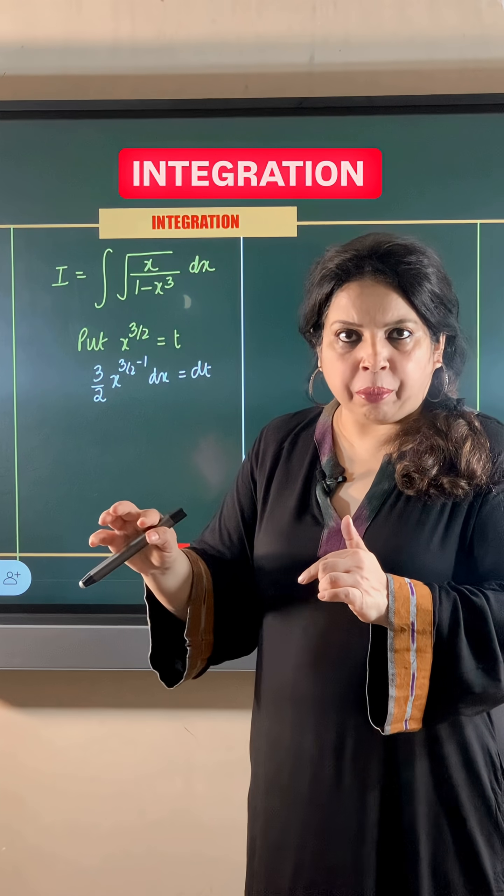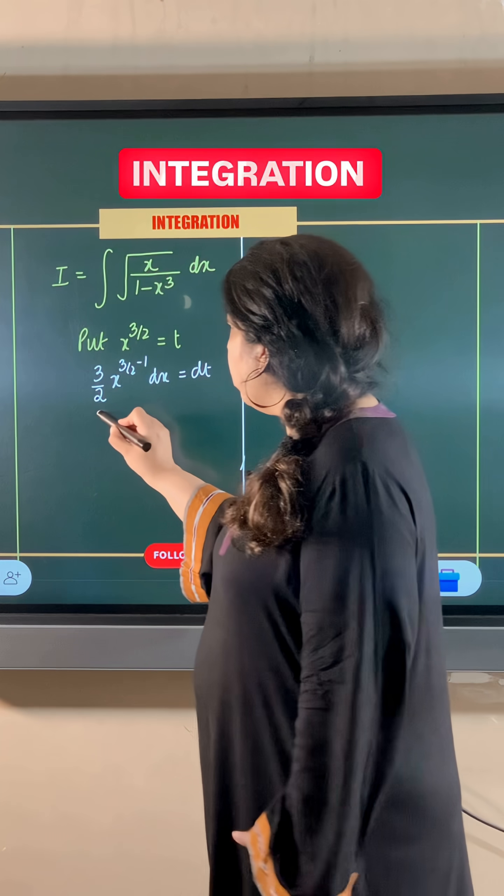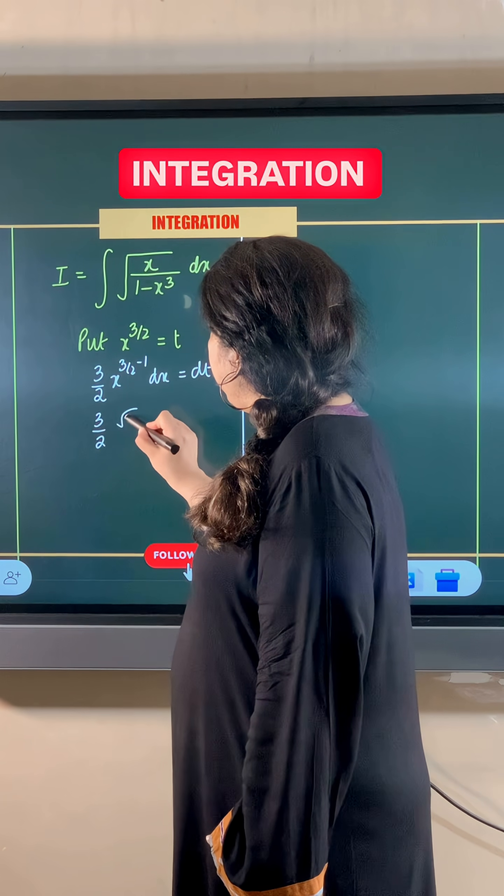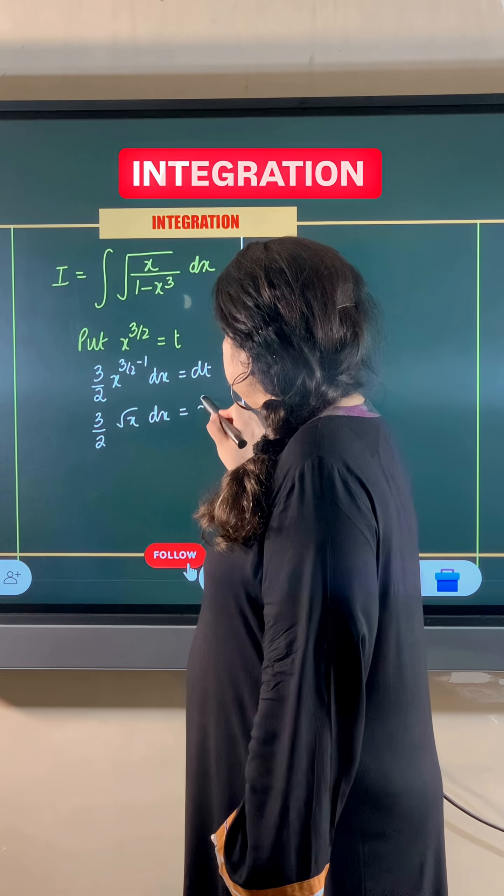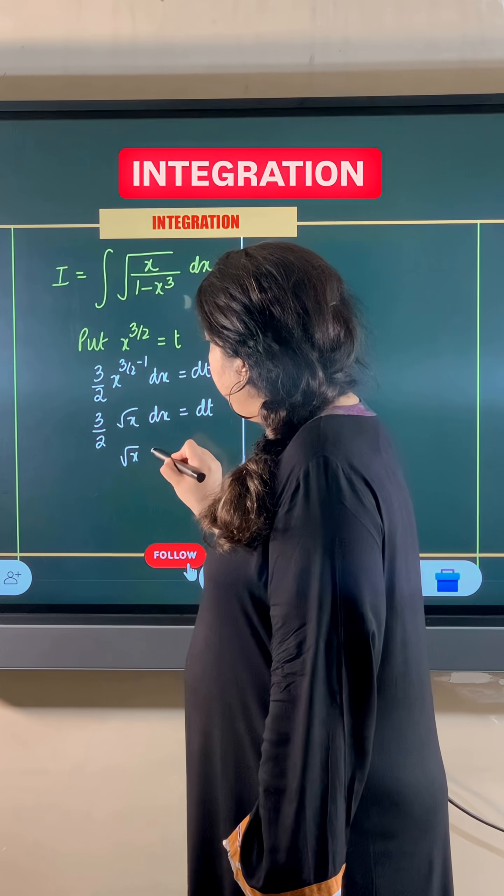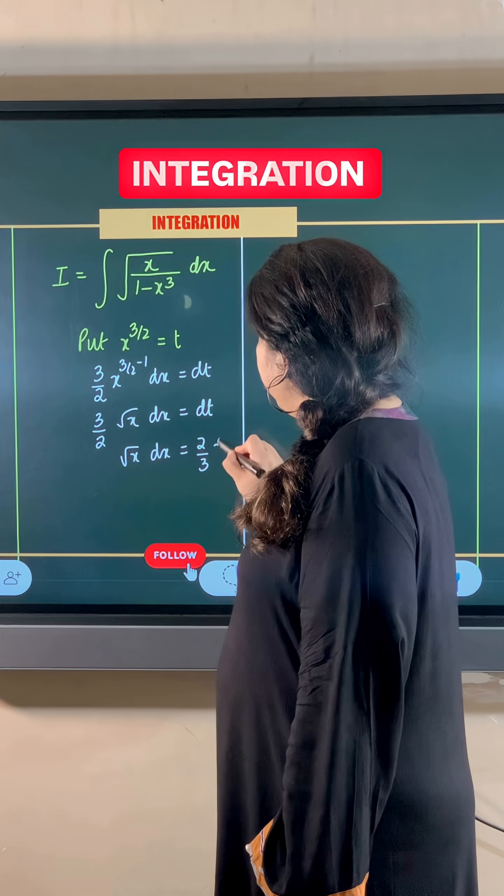x to the power 1 by 2 simply means square root of x. So this becomes 3 by 2 square root of x dx is equal to dt. So this way, I am getting the value of root x dx is equal to 2 by 3 dt.